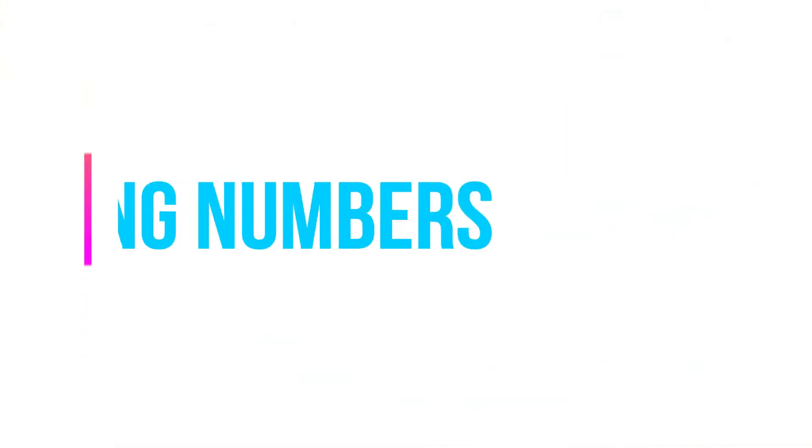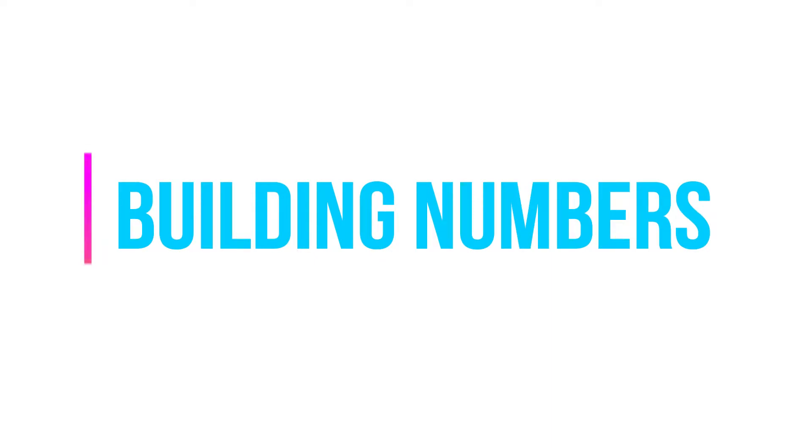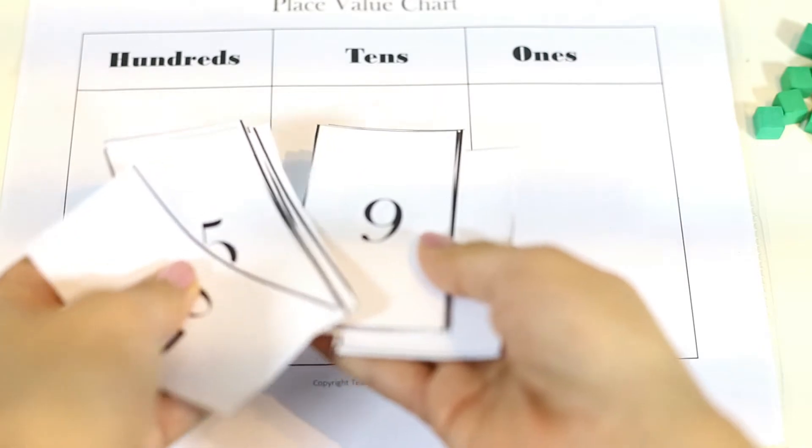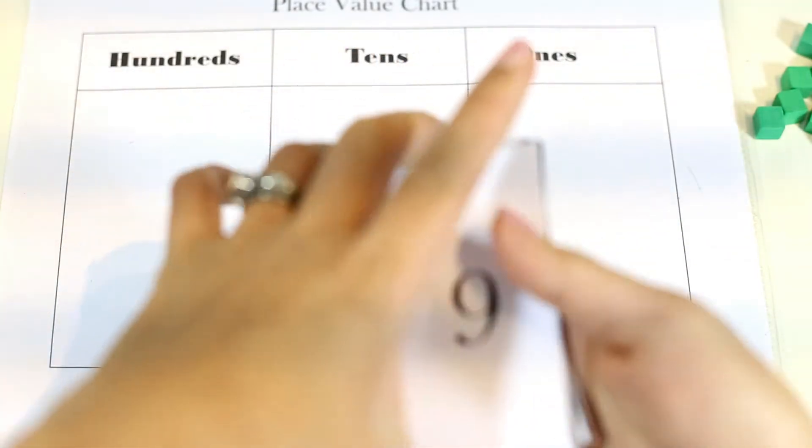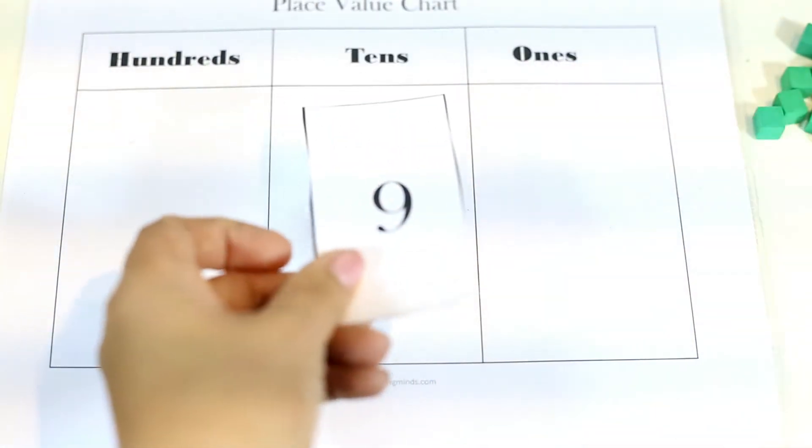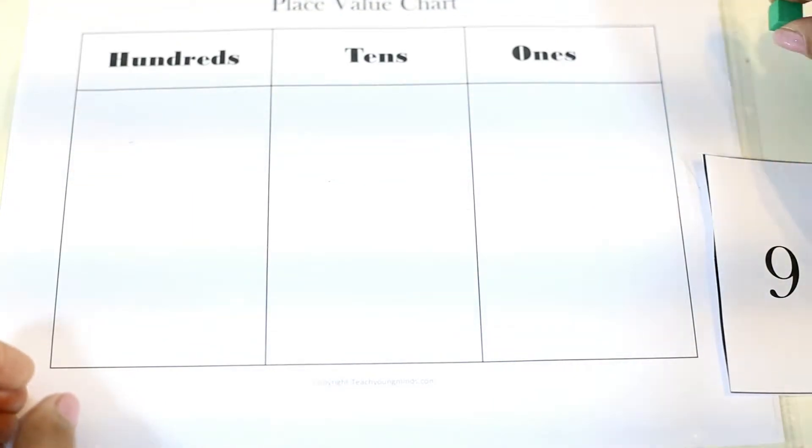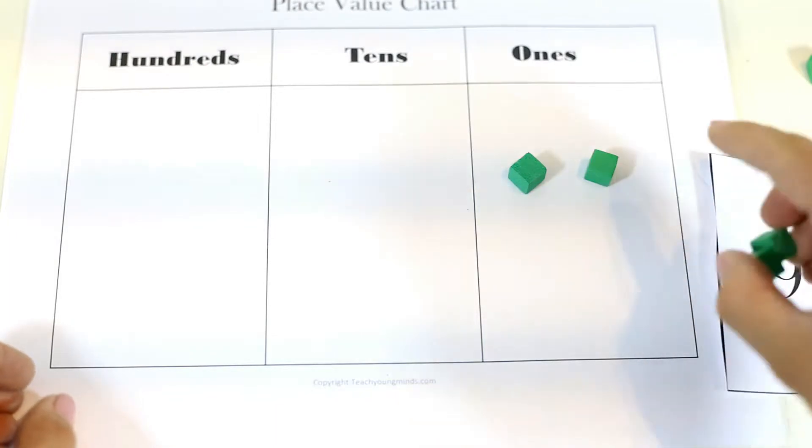The next activity I have is called building a number. You can use a deck of cards. This is in the download. Basically, you want the learner to just build a number. Say, for example, you have the number 9. The learner builds 9, as in 9 ones.